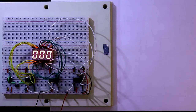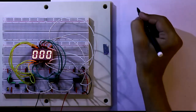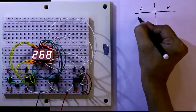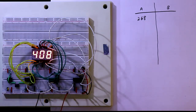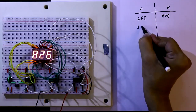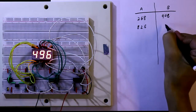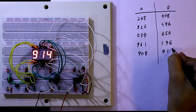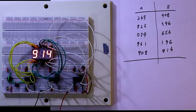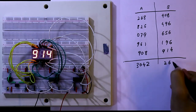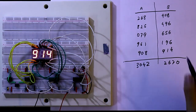With this circuit you can play a little game. Let's say there are 2 players — player A and player B — each having 5 chances to press the switch. For player A: 286, 408, 826, 496, 914 — player A gets a total of 3042. For player B the total score is 2670. So player A wins.